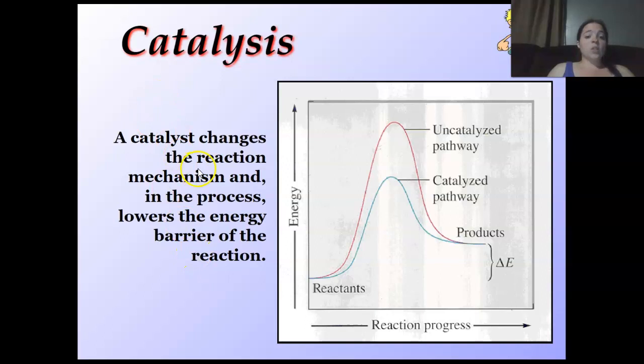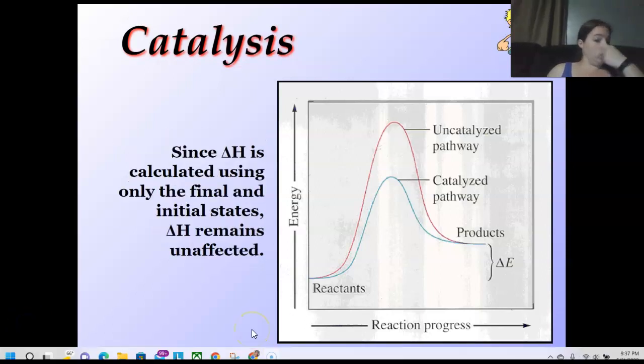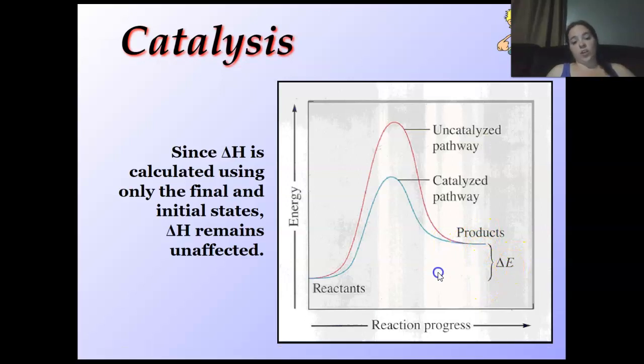What the heck does a catalyst do? A catalyst changes the reaction mechanism and, in the process, lowers the energy barrier of the reaction. You remember how I showed you earlier, temperature lowered it? It's kind of like the same thing. Say I lowered and I got temperature. I increased the temperature and I lowered it to here. I want to lower it even more to make my reaction go faster. So I'm going to throw in a catalyst. The catalyst is going to go from here down to here. So it's going to go faster. Since delta H is calculated using only the final initial states of delta H remains unaffected. I'm just going from here to here, not delta E, delta H.